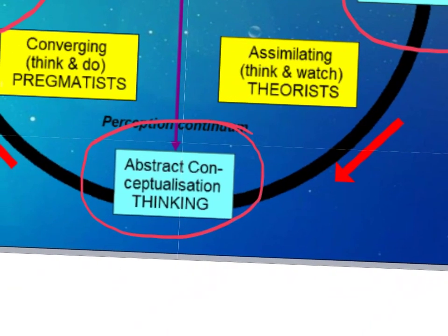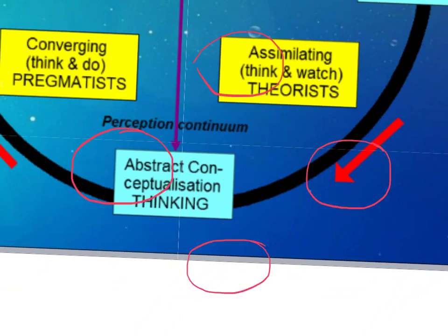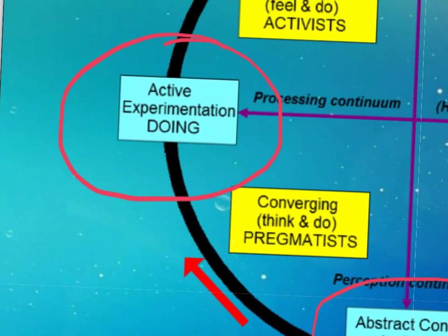Next we have abstract conceptualisation. This is about evolving the stages of interpreting the events carried out and making sense of them. This stage is also classed as the planning stage. The next stage is active experimentation, which is about enabling you to take new learning and predict what is going to happen next — what actions should be taken to refine the way the task has happened and redoing as required.